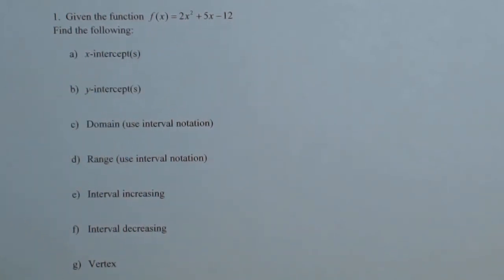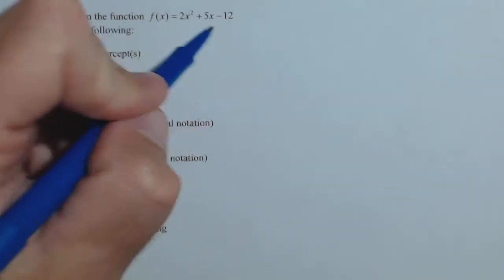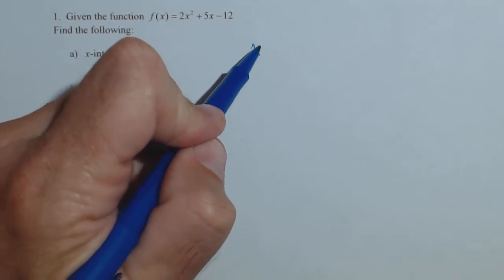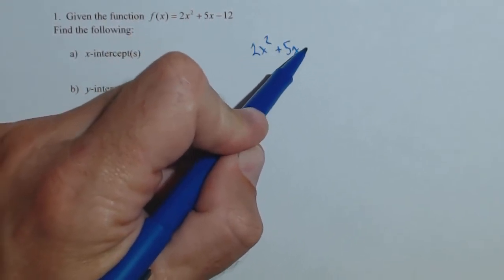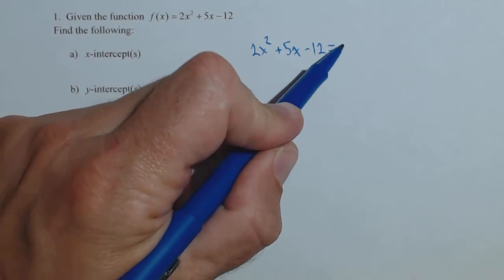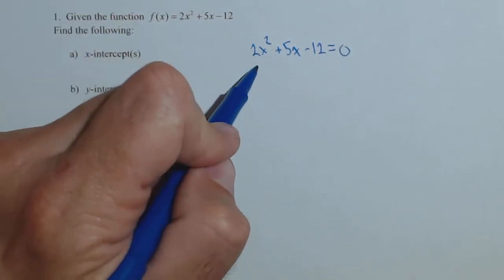We're given this quadratic, and then we're going to have a list of things we're going to find. First thing is the x-intercepts. Those are where it's equal to zero. So we're going to take, one option is factoring. You might want to use the quadratic formula. You could use your calculator. Let's go ahead and factor this one.